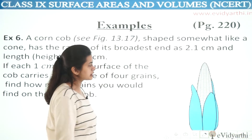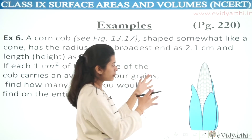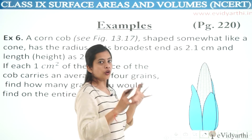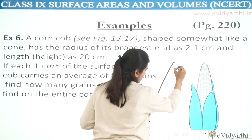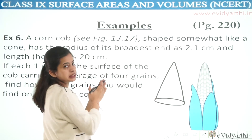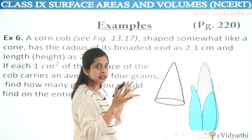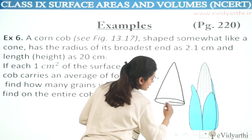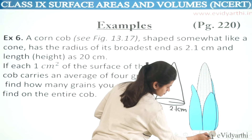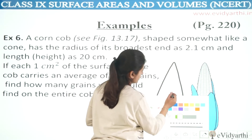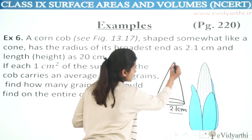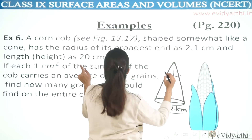So what is given here? For suppose, you have a cone — this is somewhat like a cone, this type has a shape. This is our top end. The radius of the broadest end — what is the broad end? Yes, this is the broad end. The radius given is equal to 2.1 cm. Also, the height given to our cone is 20 cm.